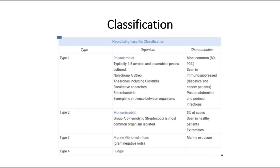NF can be classified into four types. Type 1 is polymicrobial, where there are four to five species cultured. This is the most common type, seen in 80 to 90 percent of cases, mostly in immunosuppressed patients.